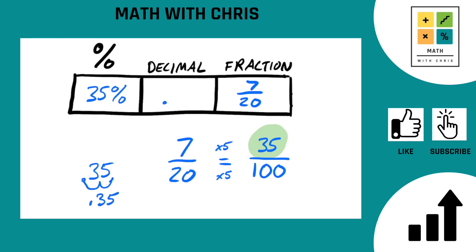And put it in our answer box. 0.35 is the same as 35%, is the same as 7 20ths. And that is it for that.